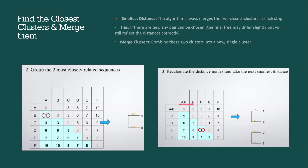In the next distance matrix, A and B are clustered together on both axes, and the remaining sequences remain as before. We look for the smallest value again — it's 1, so we cluster D with E. Dividing 1 by 2 gives 0.5 on each branch. Now D and E are clustered together, and A and B are clustered together.